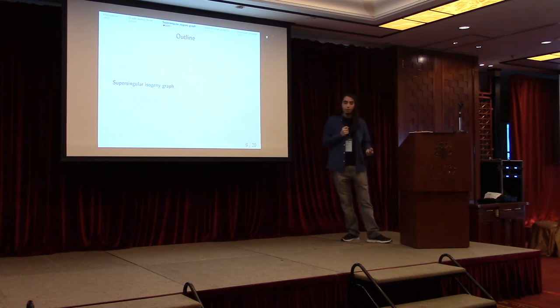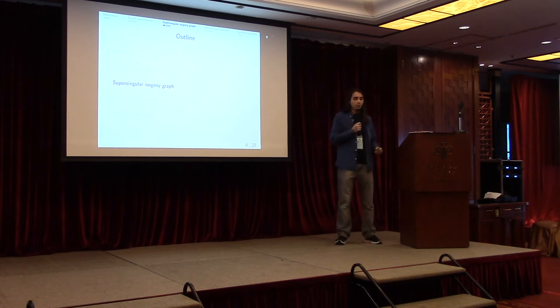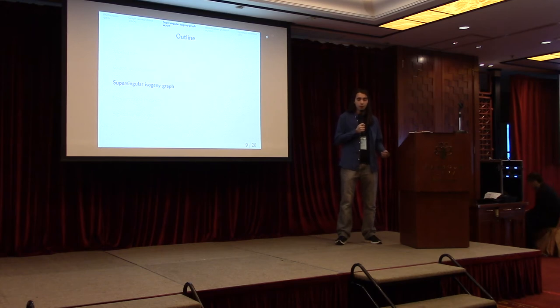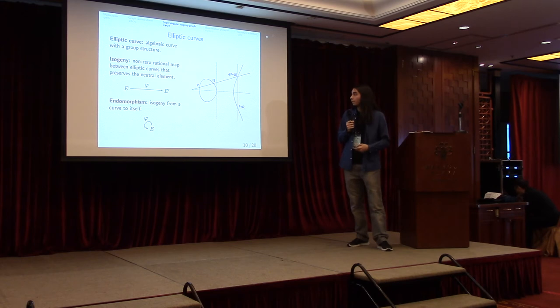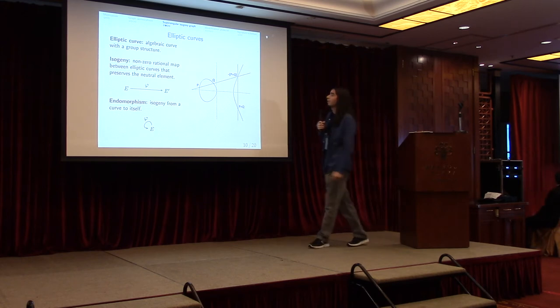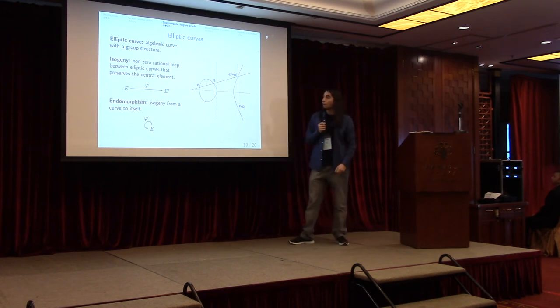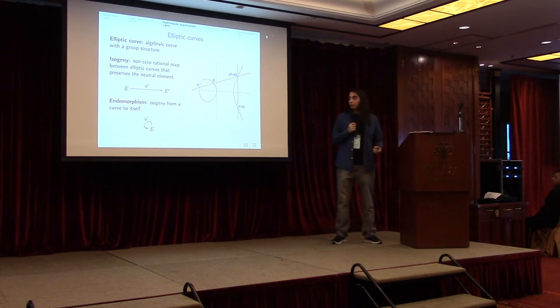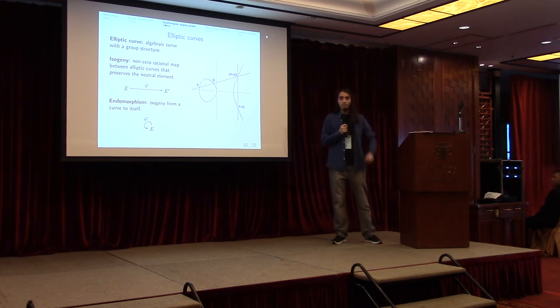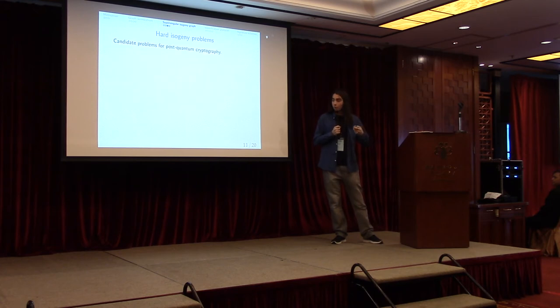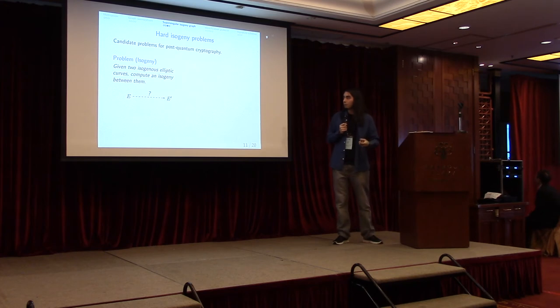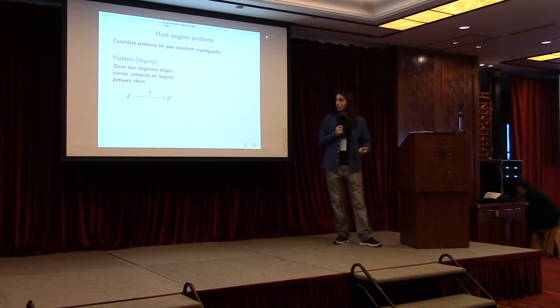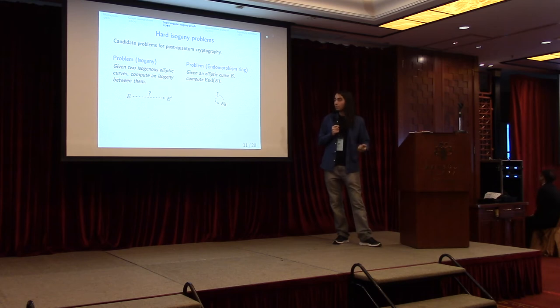To introduce the supersingular isogeny graph I first need to introduce very few simple definitions of elliptic curve theory. An elliptic curve, I believe we all know what it is, it's just an algebraic curve with a group structure. We can essentially add two points by using this rule. An isogeny is essentially a function between two elliptic curves, and an endomorphism is an isogeny from a curve to itself. We have this structure in which we have two points and we have an arrow between them and we want this arrow to be hard to compute, so the natural problem we come up with is the isogeny problem. We have two isogenous elliptic curves and we want to compute the isogeny between them. This is believed to be hard, and a related problem is given an elliptic curve, compute the endomorphism ring.